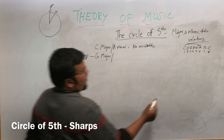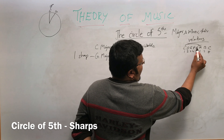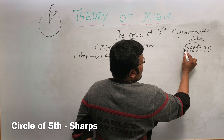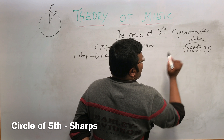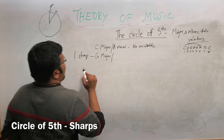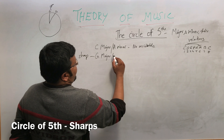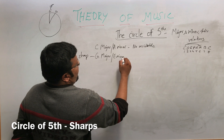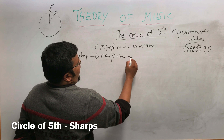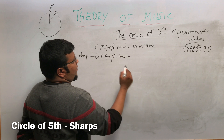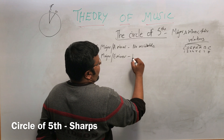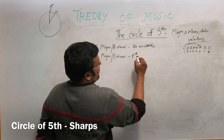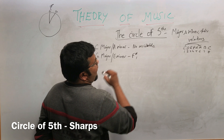The sixth note of G major — counting one, two, three, four, five, six, seven — is called E minor. And the one-sharp scale is G major.